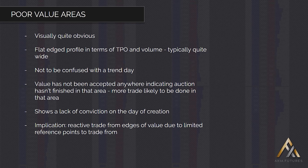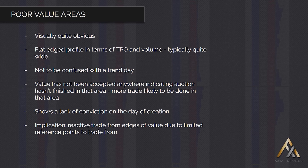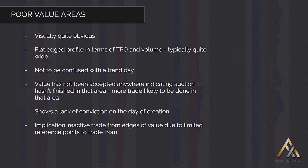One thing to be clear on — I'll give you an example of this at the end — is not to confuse a poor value area with a trend day. A trend day will also have a rather flat-edged profile, but particularly the volume profile will be very different. It will show peaks and troughs in volume, whereas with a poor value area it's very flat and even all across the board. Trend days have peaks and troughs. Also from a TPO, so the letters point of view, a trend day will have more single prints in it, whereas a poor value area will have numerous prints at every price.